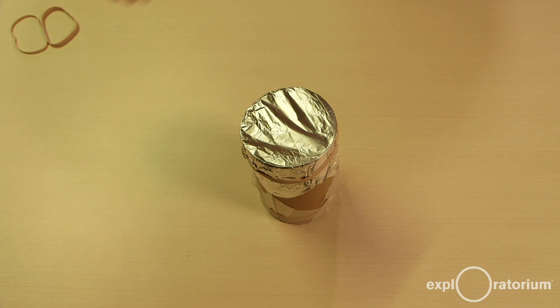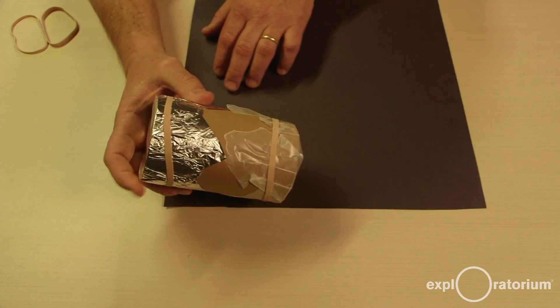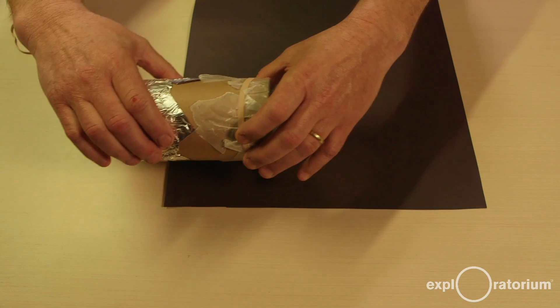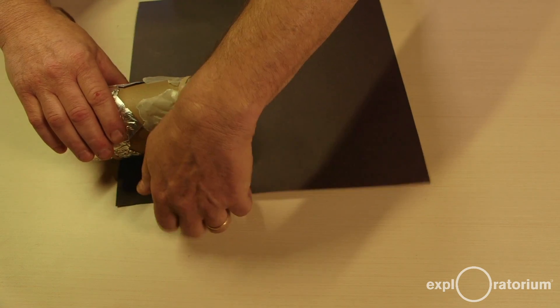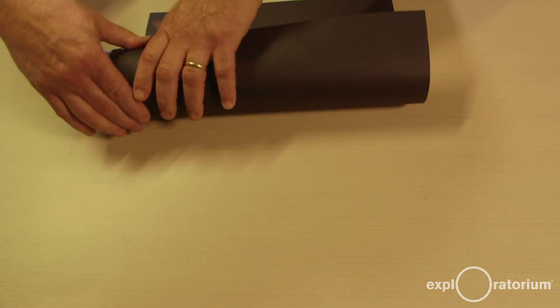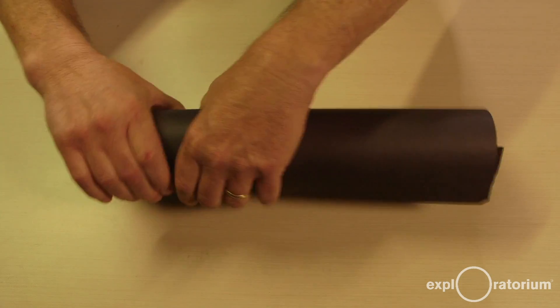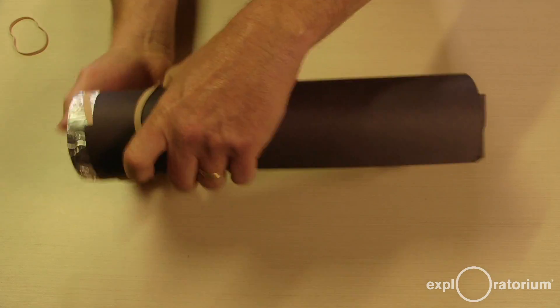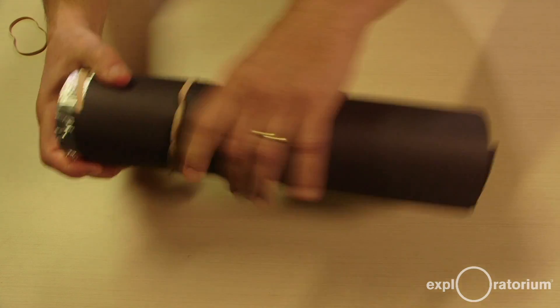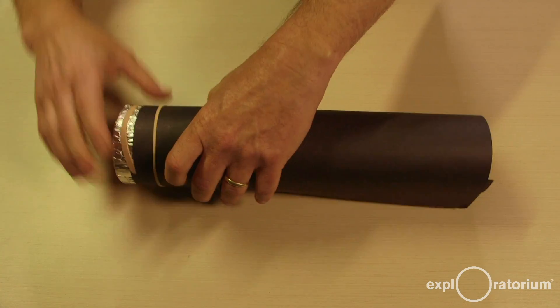If you're going to be doing your activity where there's going to be a lot of ambient light, I highly recommend wrapping your device in some black construction paper. I recommend wrapping the paper so that your wax paper is going to be covered, and the aluminum foil is going to be exposed on this end. After you wrap it, put two more rubber bands to secure the black paper onto your device.